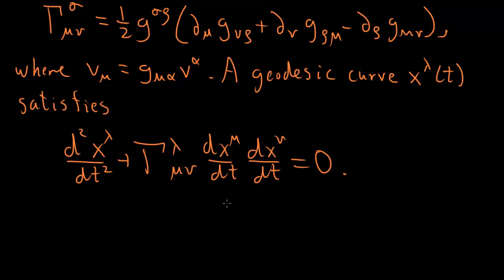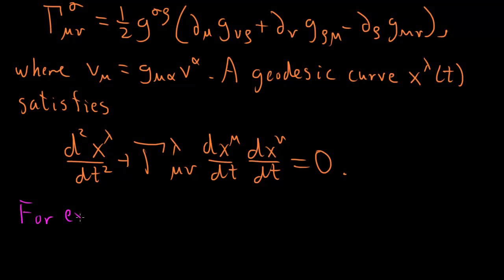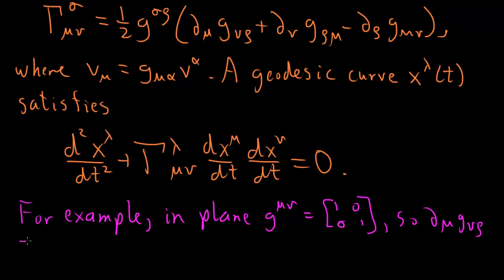So for example, let me switch color to keep things fresh, for example in the plane that we remember discussing, in the plane we had that the metric g_μν is [1, 0; 0, 1]. So derivatives of these numbers are all 0 because we see no variables like x's in them. So each derivative, ∂_μ g_νρ and so on equals 0. And hence, all of the Christoffel symbols, these Γ^σ_μν, equals zero.